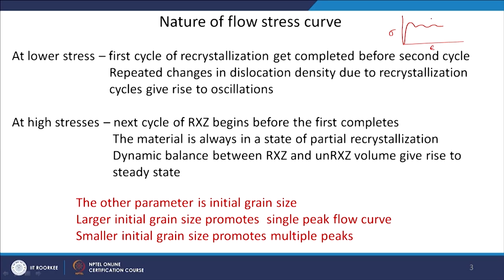The first thing we want to explain is how these multiple oscillations take place. The flow stress increases as the dislocation density increases in the material. When recrystallization has happened, the grain size has refined and grains are relatively strain-free, meaning the flow stress will come down. Then the next cycle of recrystallization will take place. You will again have a peak, again the recrystallization completes and the stress comes down, and so on. This repeated change in dislocation density — increase, then decrease after recrystallization — gives rise to these oscillations.